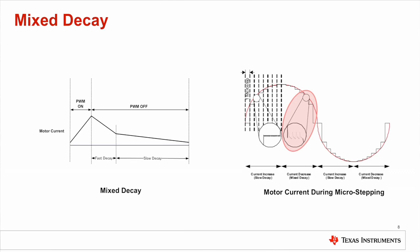A mix of fast and slow decay is called mixed decay, where in a decreasing current trend, the decay starts fast and ends slow. This approach offers a trade-off between ripple and settling time in motor current, yielding better motor performance.